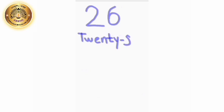The spelling of number 26 is T, W, E, N, T, Y, S, I, X — TWENTY-SIX. Repeat with me again: T, W, E, N, T, Y, S, I, X — 26. Understood, children? Very good.